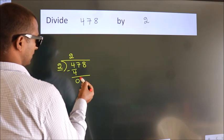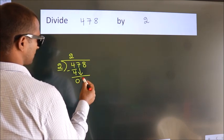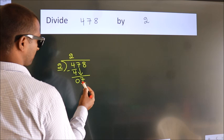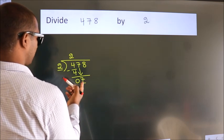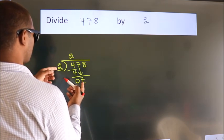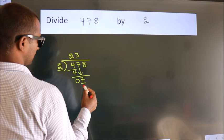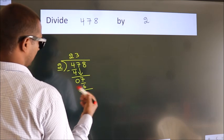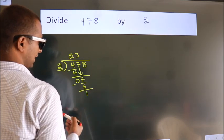After this, bring down the beside number. So 7 down. So 7. A number close to 7. In 2 table is 2 3s, 6. Now we subtract. We get 1.